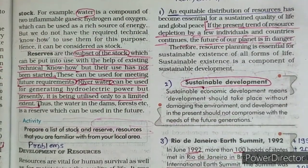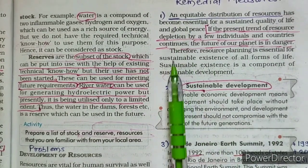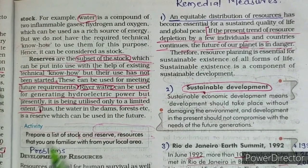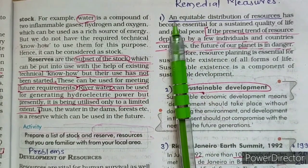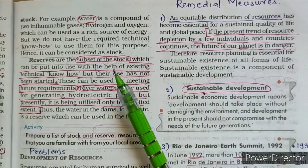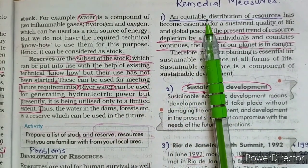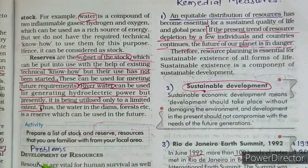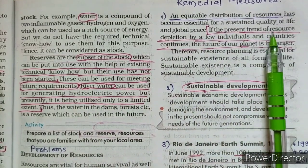Now the question comes: are there any remedial measures? Yes, there are some remedial measures to stop such problems. The first remedial measure is equitable distribution of resources — equal distribution. We should divide resources among both rich and poor people so that there will be no problem in the development of resources.